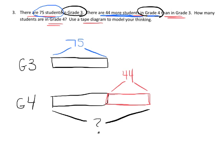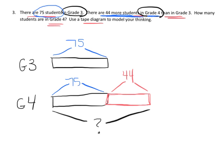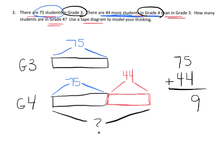Our question mark is the total Grade 4 length. Since we drew both bars identically at first, that shared length is also 75. So the Grade 4 bar is 75 plus 44. Five plus four is nine, and 70 plus 40 is 110, giving us 119. There are 119 fourth graders.